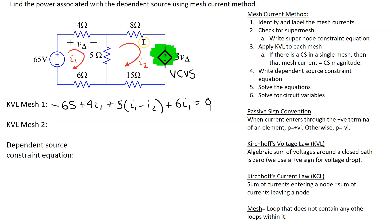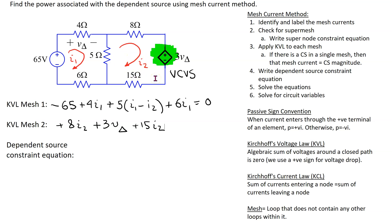Moving on to mesh 2, we start from the 8-ohm resistor: this is a voltage drop of 8*i2. For the dependent source, i2 is entering the terminal marked plus and leaving the terminal marked minus, so this is a voltage drop written with a positive sign: 3*v_delta. The next term is 15*i2. For the last 5-ohm resistor, giving priority to i2, we get plus 5*(i2 minus i1) equals 0.